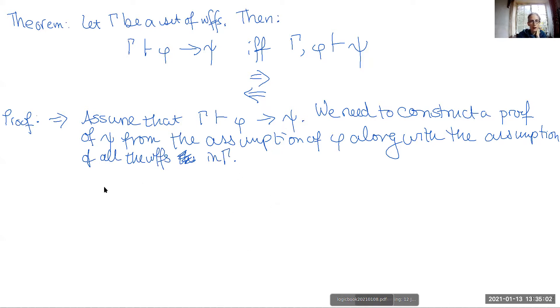So what we want to have is some proof where you've got gamma. We don't know how many members this gamma has. In fact, it could be empty, but we'll just put them here and label this as assumption. And then here we're going to have some new assumption of phi and down here at some point, say at line n, we want to have psi. Now the question is, what do we fill in these dot dot dot?